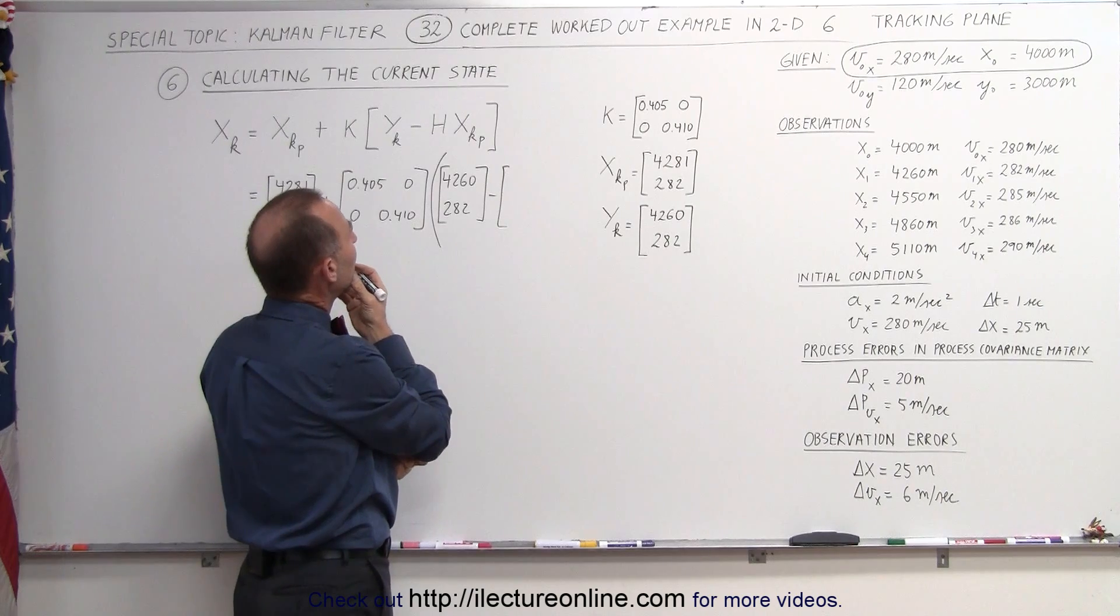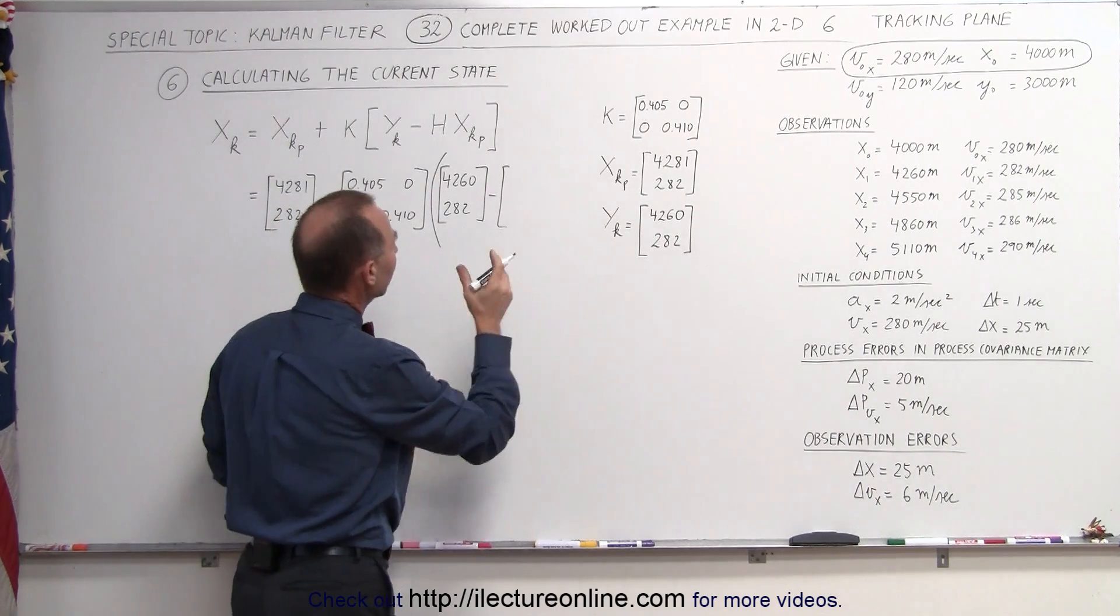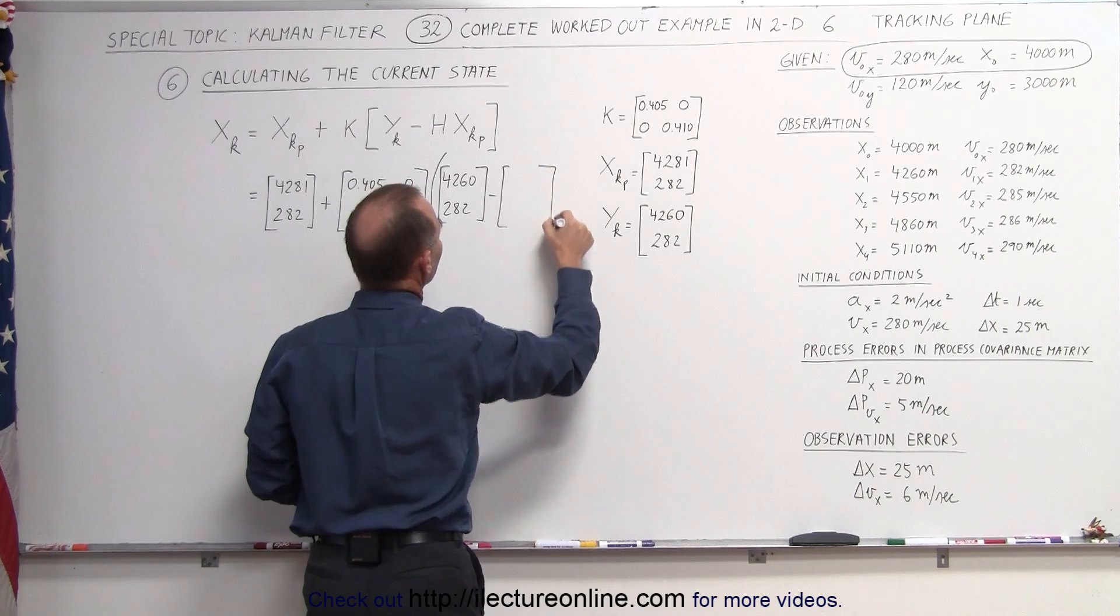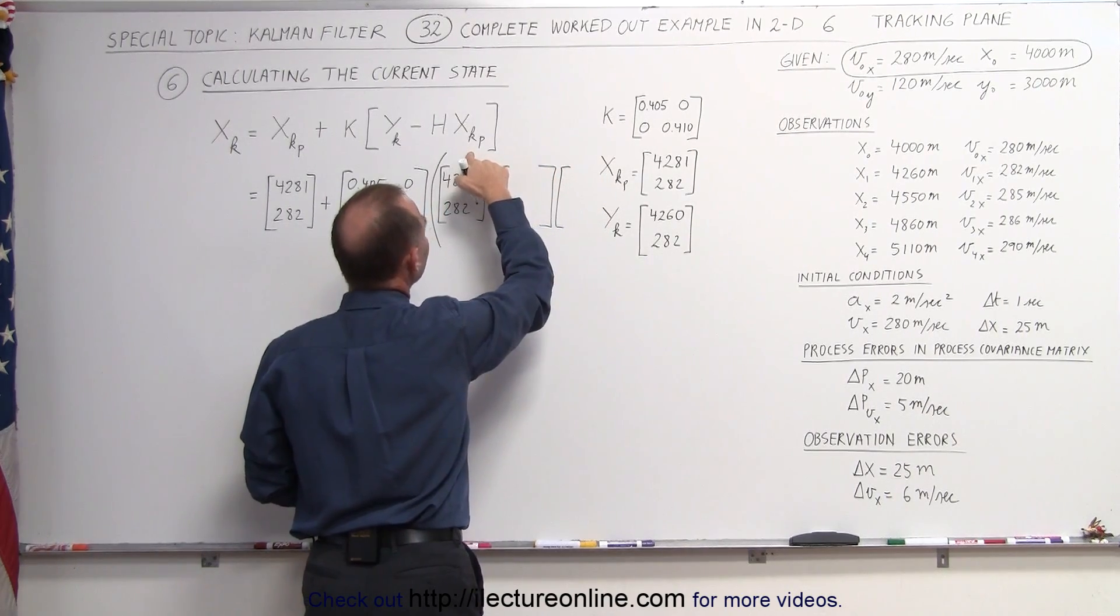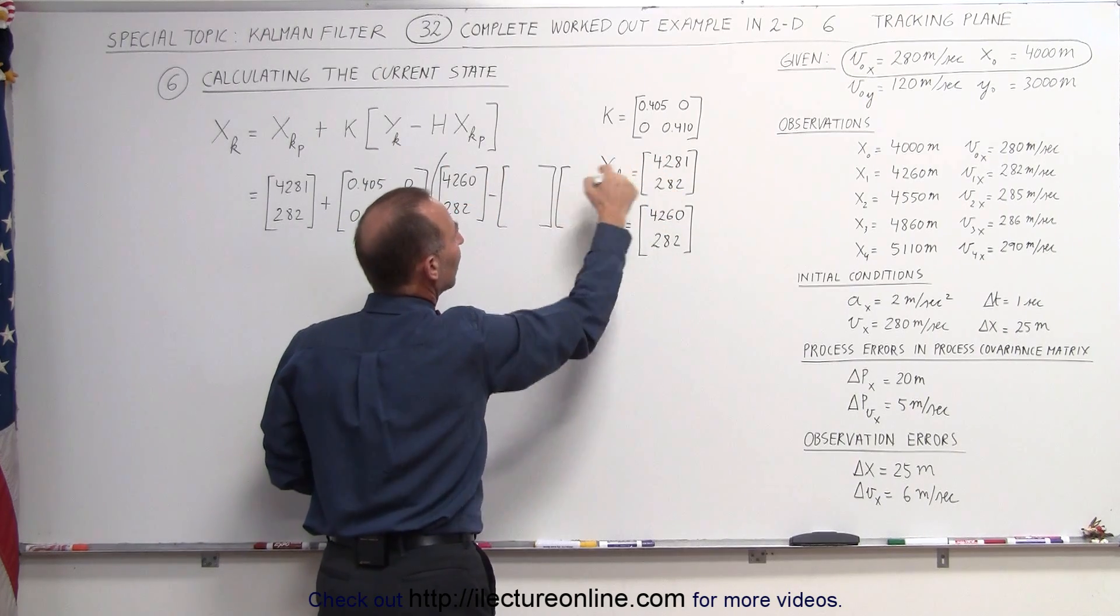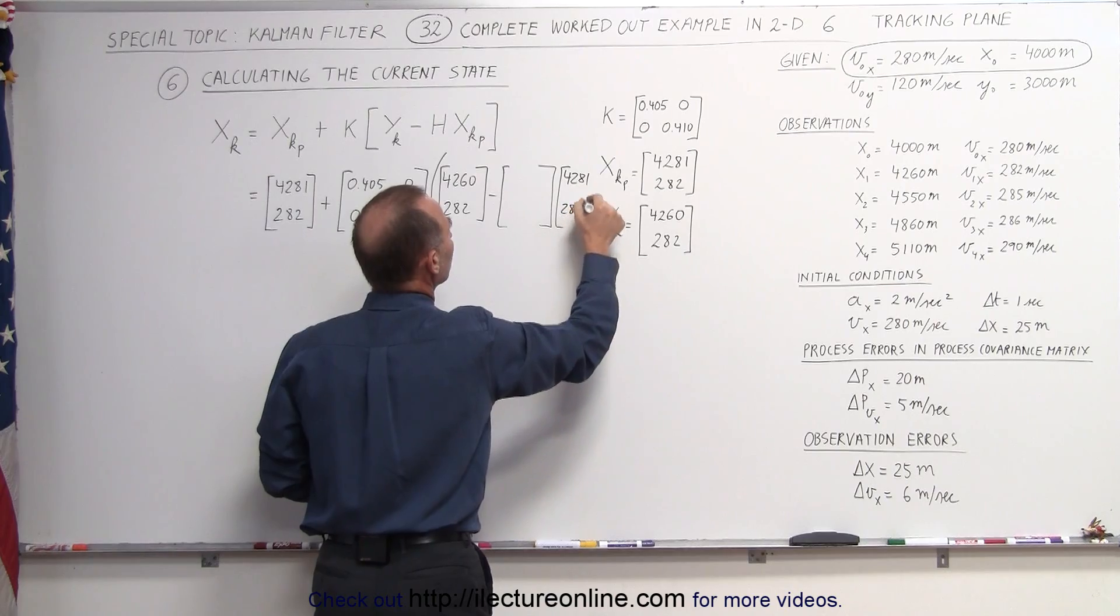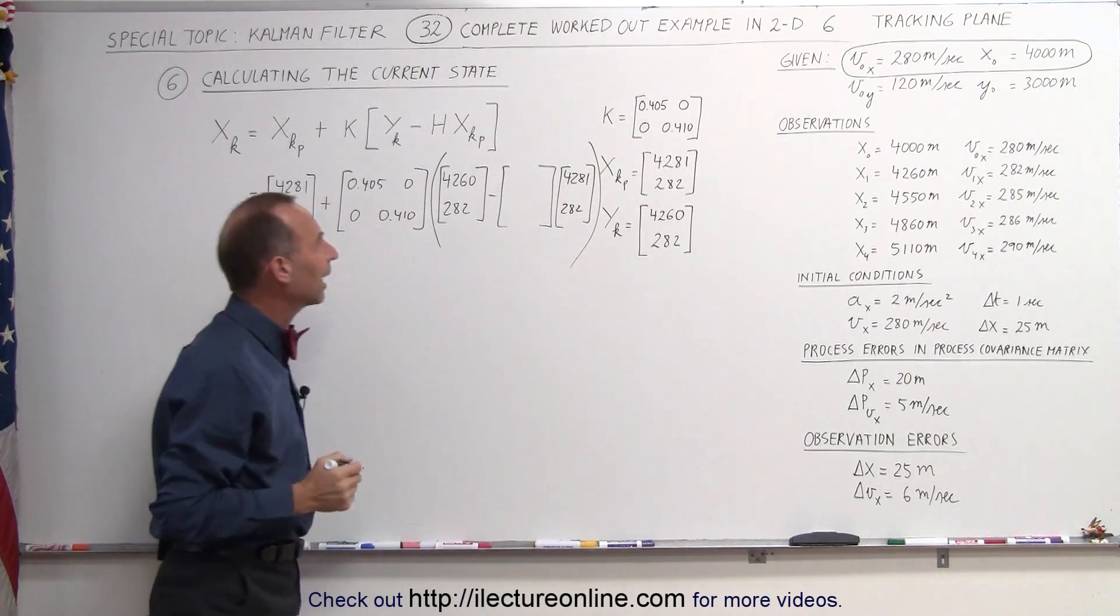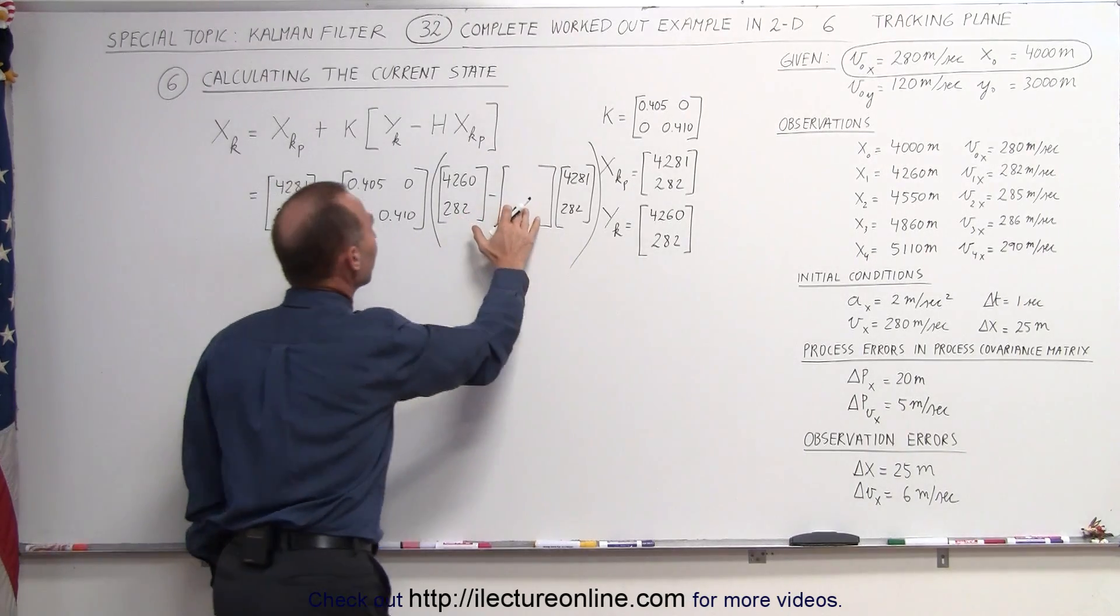The observed value was 4,260 for the position and 282 for the velocity subtract from that. Now the H matrix in this case, we want to multiply this times... Let's see in a moment what that needs to be. We'll figure it out. And here we have the predicted state. The predicted state is 4,281 and 282.